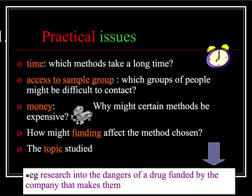When considering practical issues, remember to consider time. Which methods will take a long time? It's surprising how many sociologists actually don't conduct covert observation, for example, because they simply can't afford to take that much time off paid work. Access is certainly a practical issue - which groups of people might be difficult to contact or difficult to study? Money: why might certain methods be much more expensive?